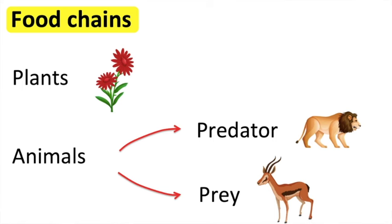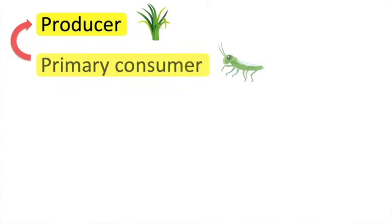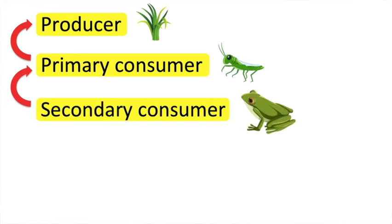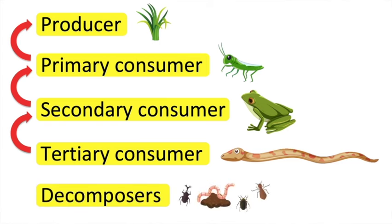A food chain shows us how plants and animals depend on each other for food. The energy in the food passes along the food chain. Food chains usually begin with a plant and end with a large animal. We begin with the producers. The primary consumers are the animals that eat the plants. The secondary consumers eat the primary consumers. The tertiary consumers eat the secondary consumers. When all living things die, decomposers feed on them — for example, bacteria, fungi, and beetles.